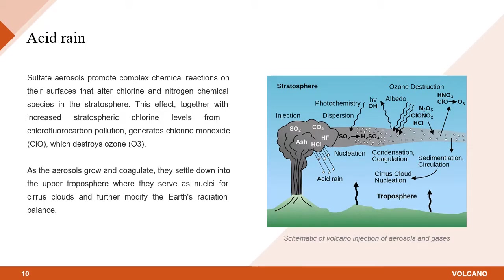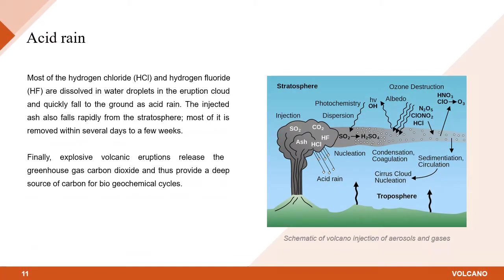As the aerosols grow and coagulate, they settle down into the upper troposphere, where they serve as nuclei for cirrus clouds and further modify the Earth's radiation balance. Most of the hydrogen chloride and hydrogen fluoride are dissolved in water droplets in the eruption cloud and quickly fall to the ground as acid rain. The injected ash also falls rapidly from the stratosphere, and most of it is removed within several days to a few weeks. Finally, explosive volcanic eruptions release the greenhouse gas carbon dioxide and provide a deep source of carbon for biogeochemical cycles.